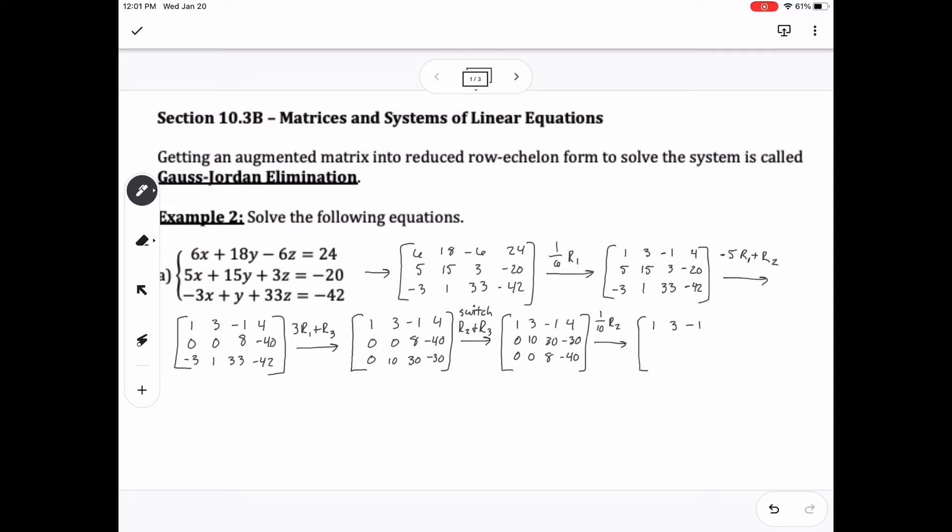And then multiply row 2 by negative 3 and add it to row 1 to make that value a zero.